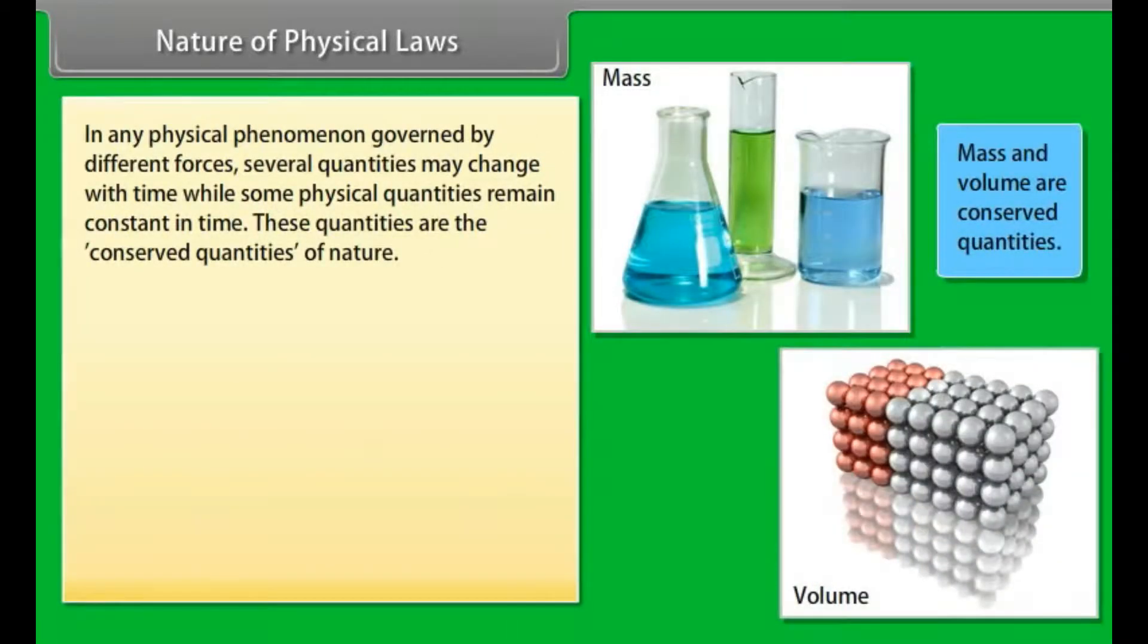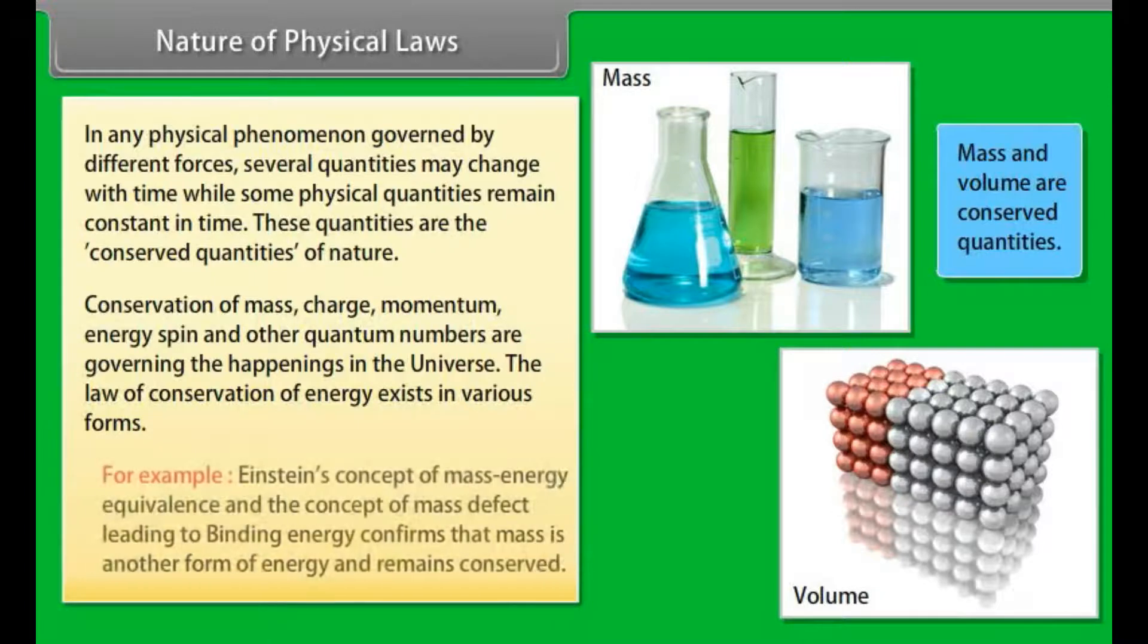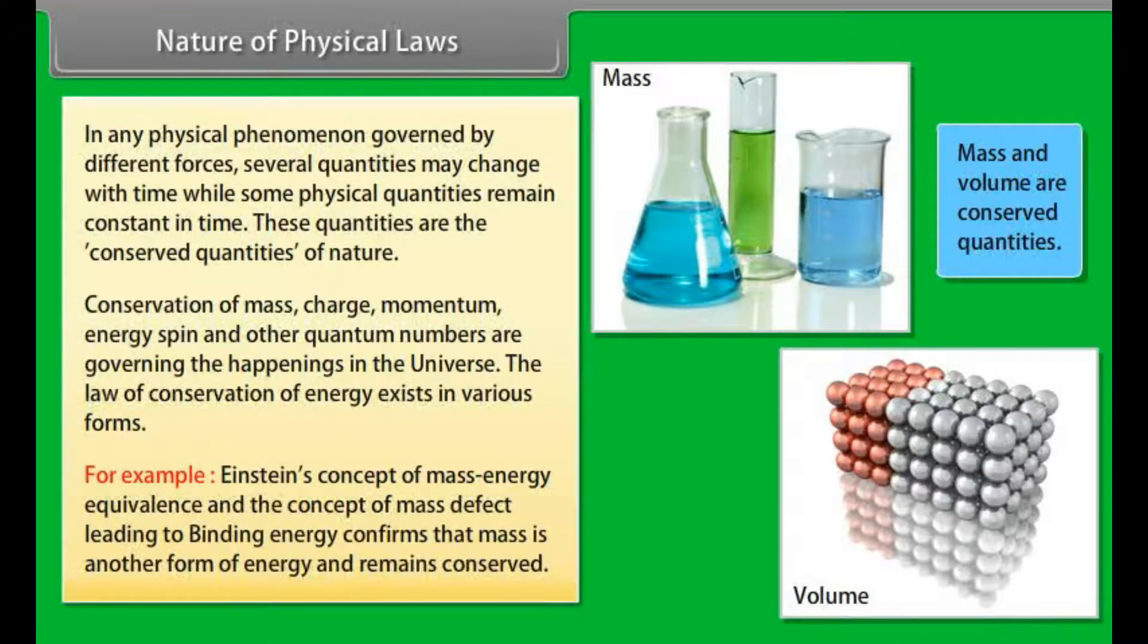Nature of physical laws. In any physical phenomenon governed by different forces, several qualities may change with time while some physical quantities remain constant in time. These quantities are the conserved quantities of nature. Conservation of mass, charge, momentum, energy, spin, and other quantum numbers are governing the happenings in the universe. The law of conservation of energy exists in various forms. For example, Einstein's concept of mass-energy equivalence and the concept of mass defect leading to binding energy confirms that mass is another form of energy and remains conserved.